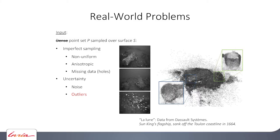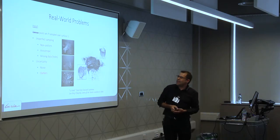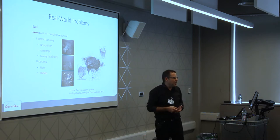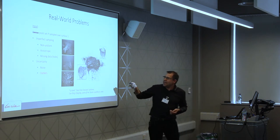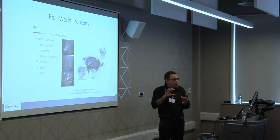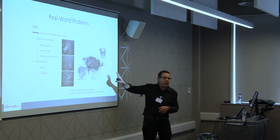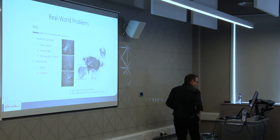This underwater example — a ship called the Sun King's flagship, which sank off the Toulon coastline in 1664 — was acquired by Dassault Systems. When you go underwater, you see fish and floating dust, and the resulting surface is far from perfect. You can barely recognize a cannon in the point set unless you rotate it. This is really the frontier of what we can reconstruct today.